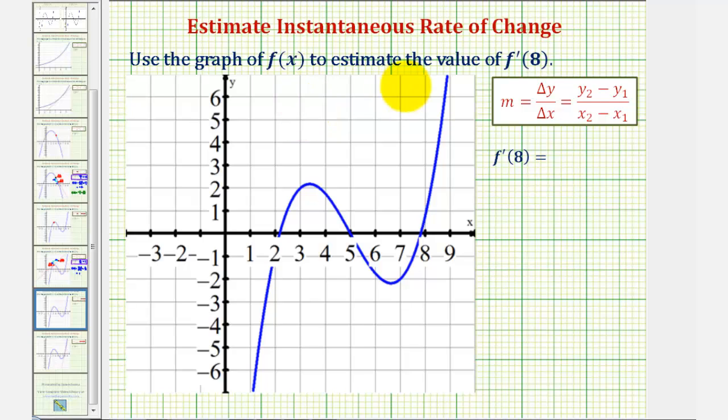We're asked to use the graph of f(x) to estimate the value of f'(8), or the value of the derivative function at x equals eight. f'(8) is equal to the slope of the tangent line at x equals eight. It's also the instantaneous rate of change of the function at x equals eight.